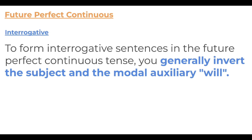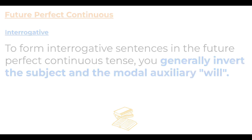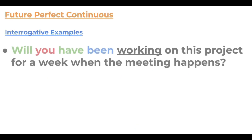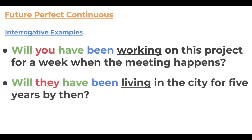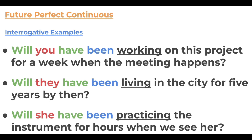For questions in the future perfect continuous, just like with the future perfect, we invert the subject and modal auxiliary 'will'. Examples: 'Will you have been working on this project for a week when the meeting happens?' 'Will they have been living in this city for five years by then?' 'Will she have been practicing the instrument for hours when we see her?' To switch back to affirmative, simply swap the subject and 'will' back.